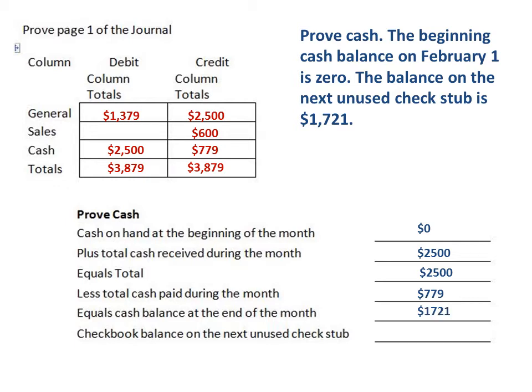We get $1,721. This is important because this number should always equal our checkbook balance on the next unused check stub, which in the transaction was $1,721. That's how we can prove cash at the end of the fiscal period or whatever period you choose.